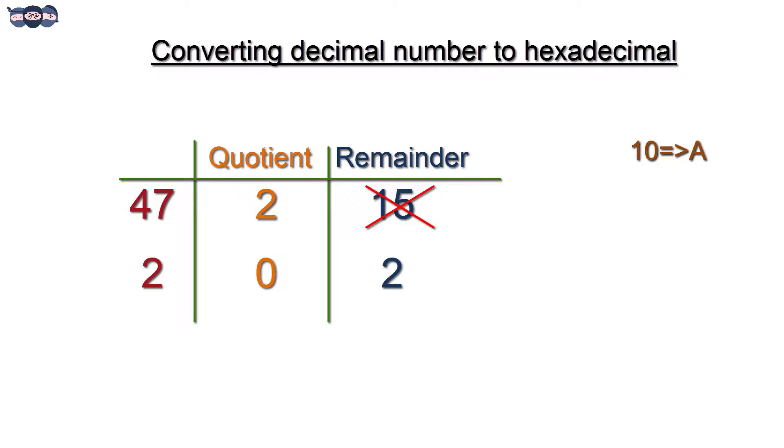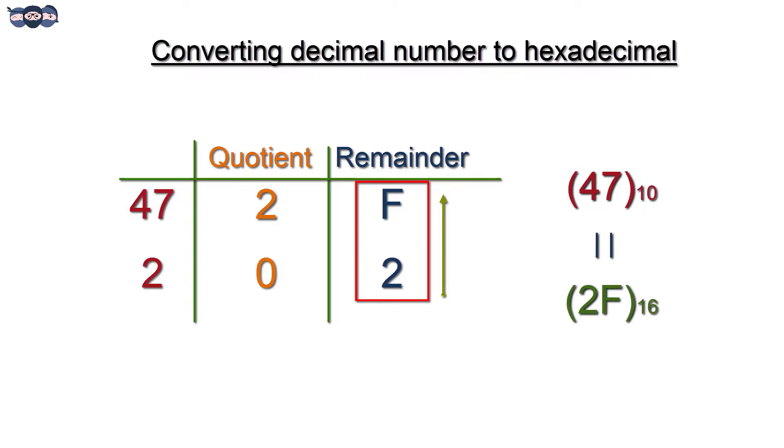Now the number 15 is not allowed in hexadecimal system. The numbers from 10 in hex are represented by alphabets. 10 is represented as A, 11 as B, 12 as C, 13 as D, 14 as E, and 15 as F. The number 15 in the remainder is replaced by letter F, which gives us 2F as hexadecimal equivalent for number 47.